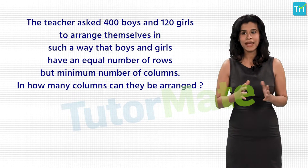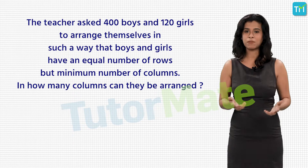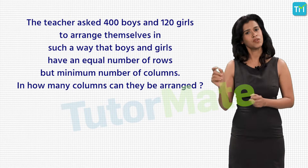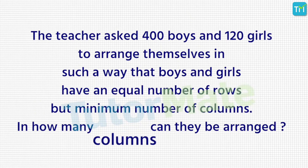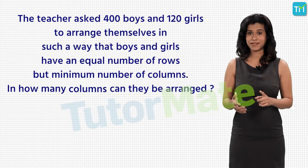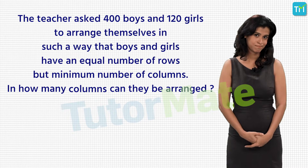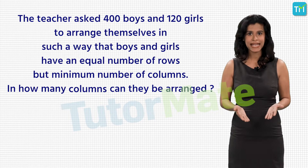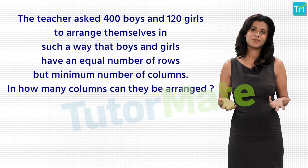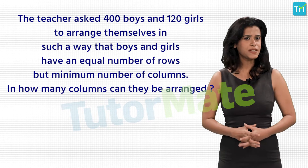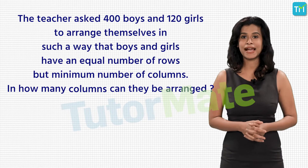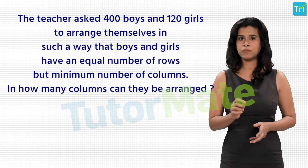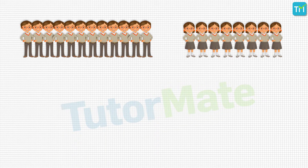Imagine this: your class has 400 boys and 120 girls, and your teacher asks you to arrange yourselves so that boys and girls form equal numbers of rows but the minimum number of columns. In how many columns can you all arrange yourselves? To understand this, let's first consider a simpler problem — we have 12 boys and 8 girls, and we have to arrange them in equal rows with the minimum number of columns.